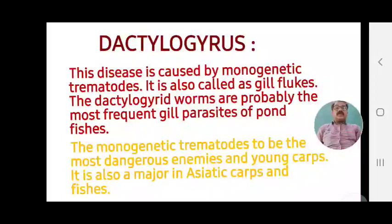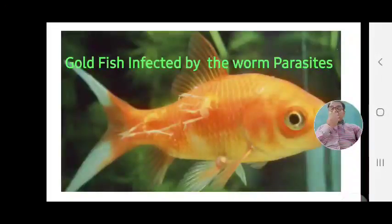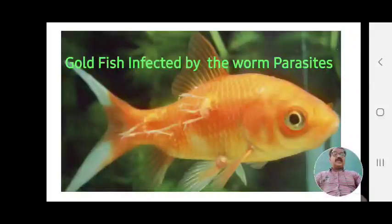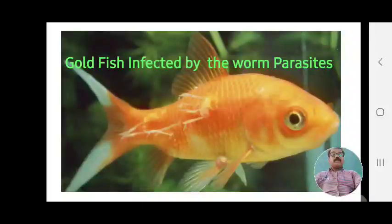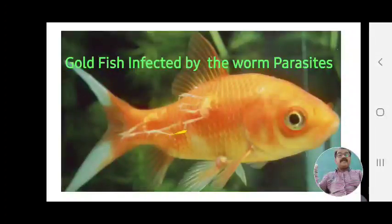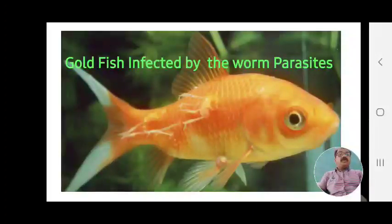Dactylogyrus is more threatening to fish culture, whether pond culture or any other culture. This image shows goldfish, Carassius auratus, infected by the worm parasite. The parasite can be seen on different parts of the body of the goldfish.